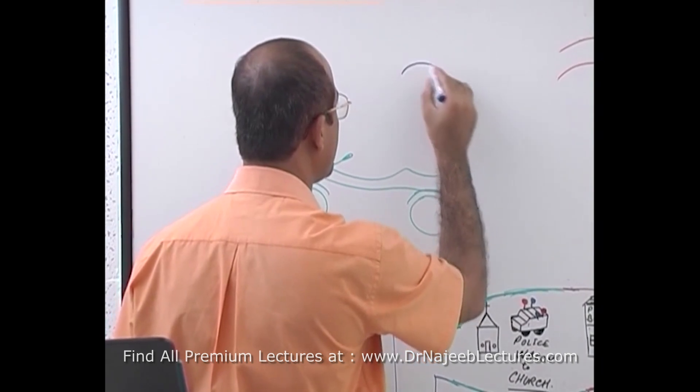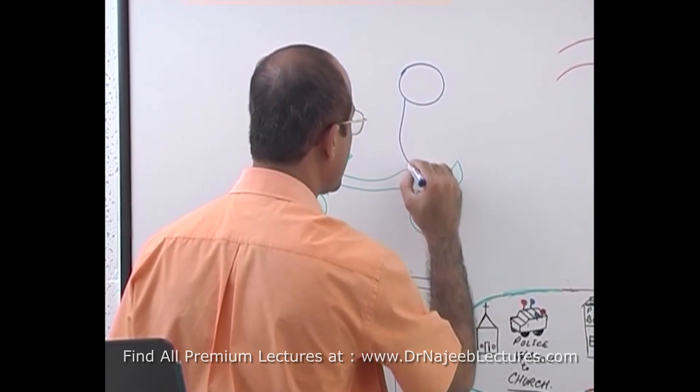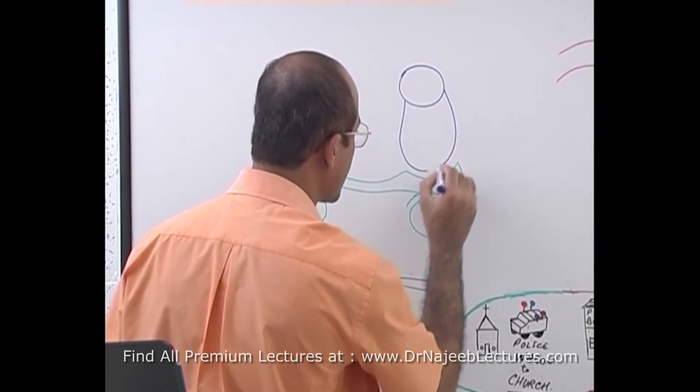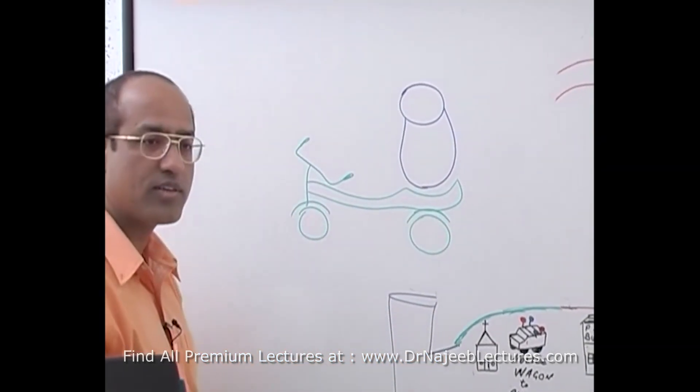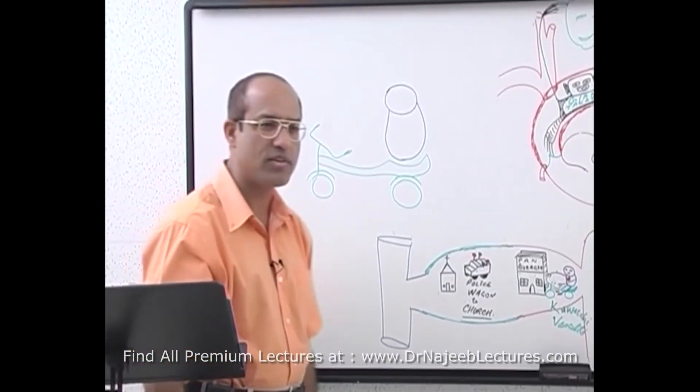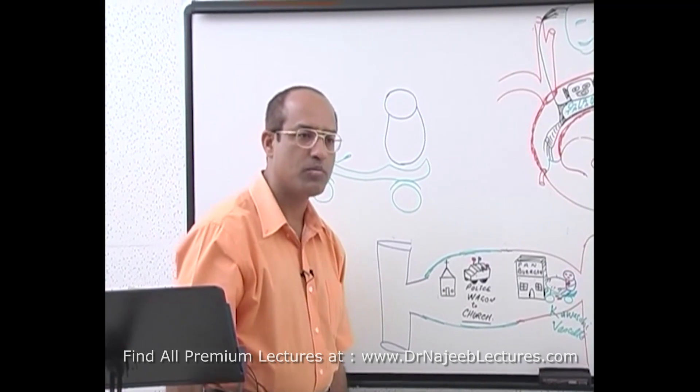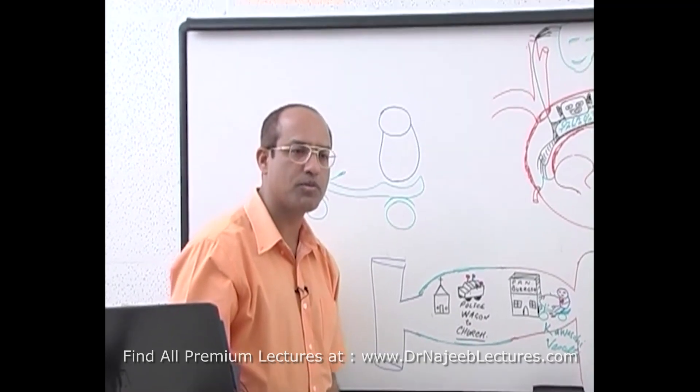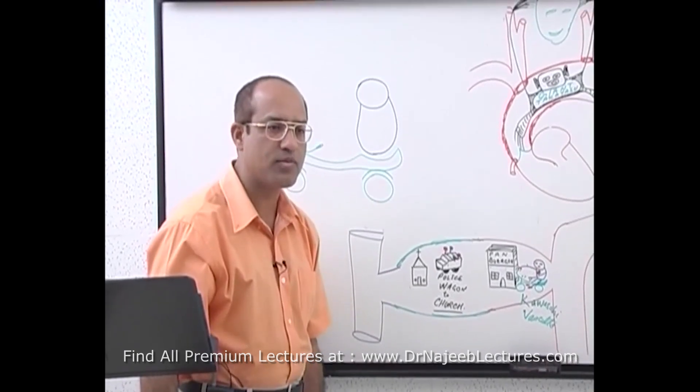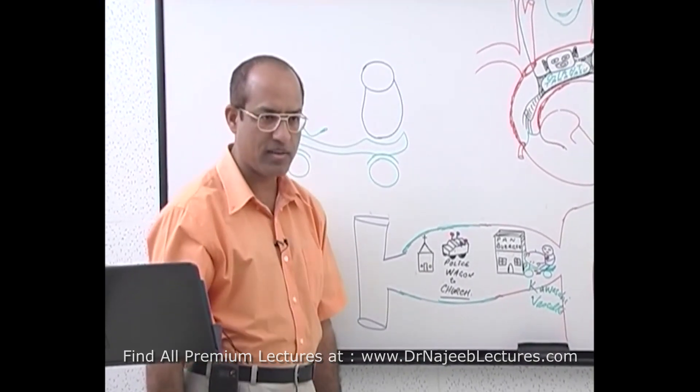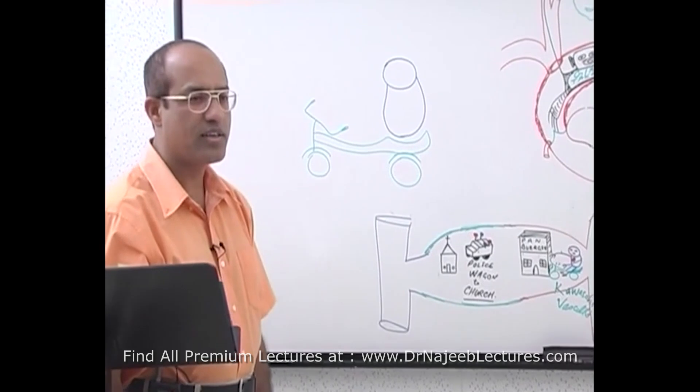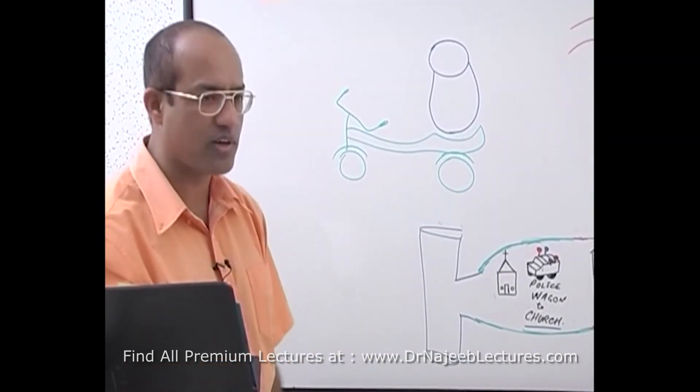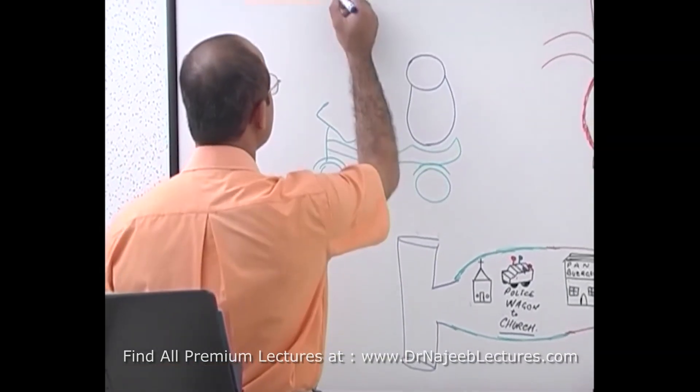And here is your Kawasaki baby. Why I say there is a Kawasaki baby? Because this disease, Kawasaki disease, is limited to babies. 80% of the patients with Kawasaki disease are less than four years old. So we can say it's a disease of infants and very young children.